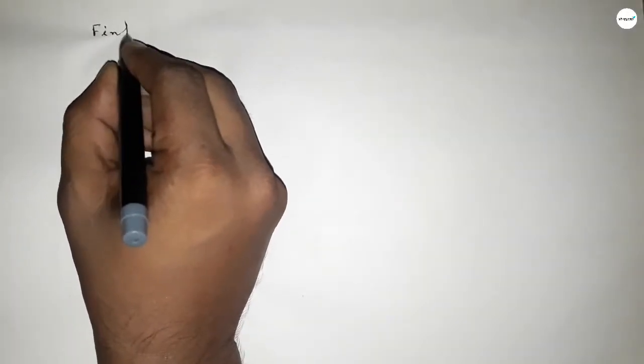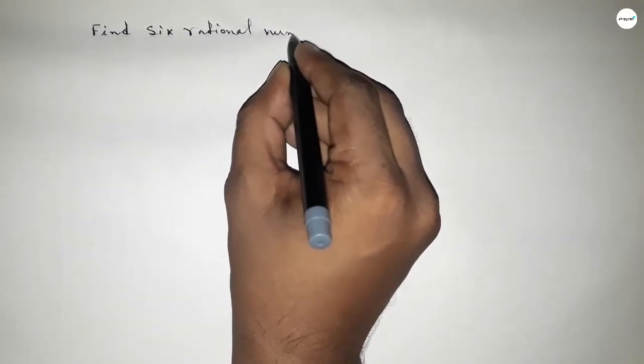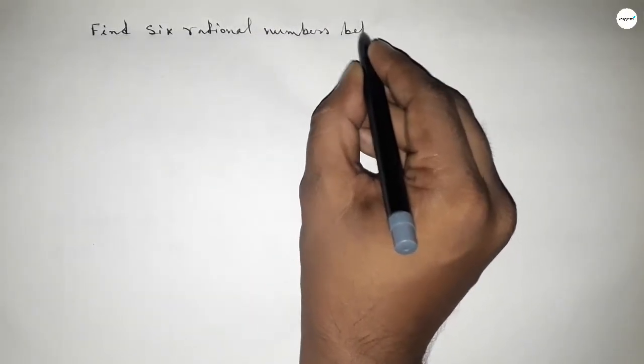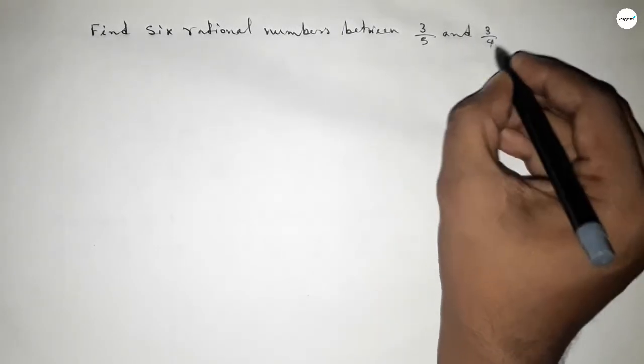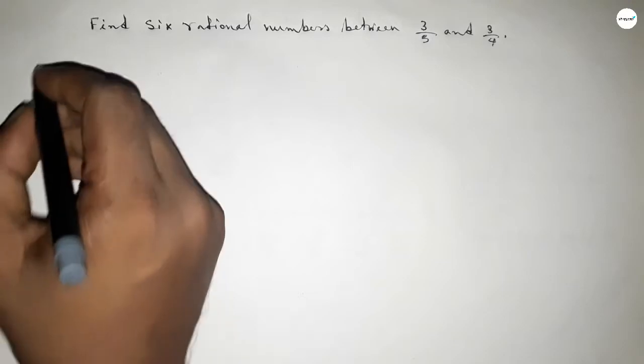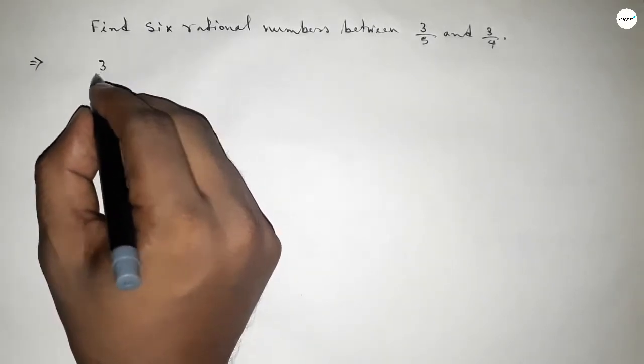Hi everyone, welcome to SSR classes. Today in this video we have to find six rational numbers between 3 over 5 and 3 over 4. So let's start the video. First of all, write down here the given numbers: 3 over 5 and 3 over 4.